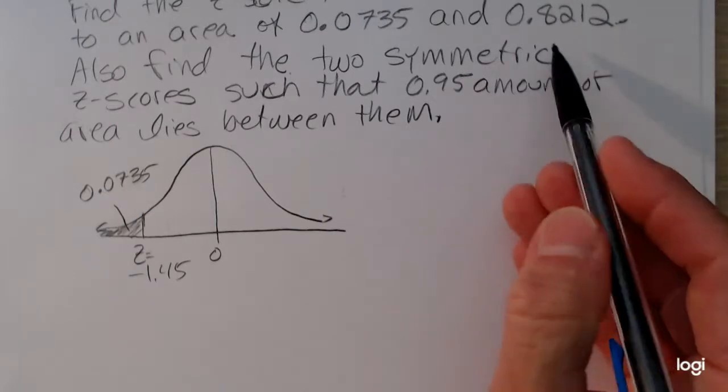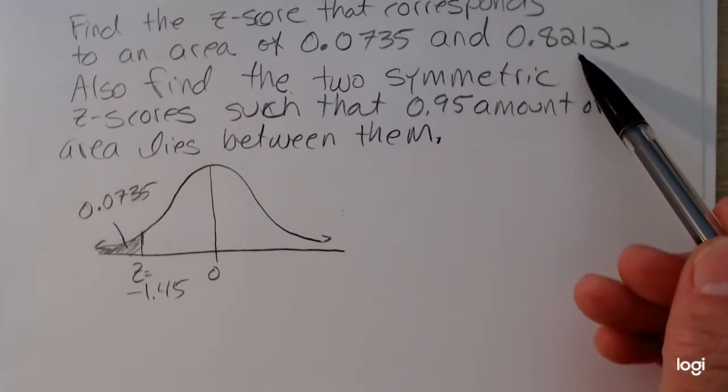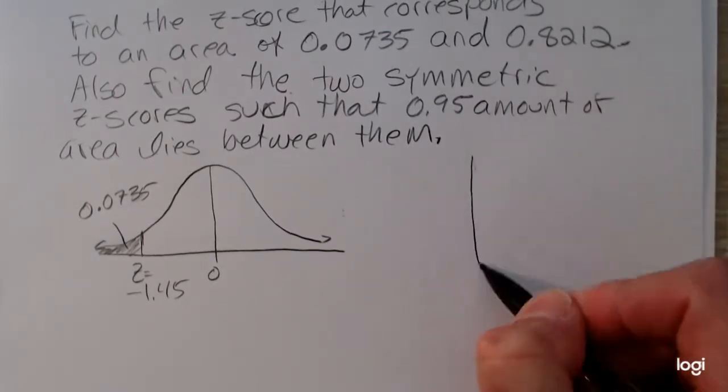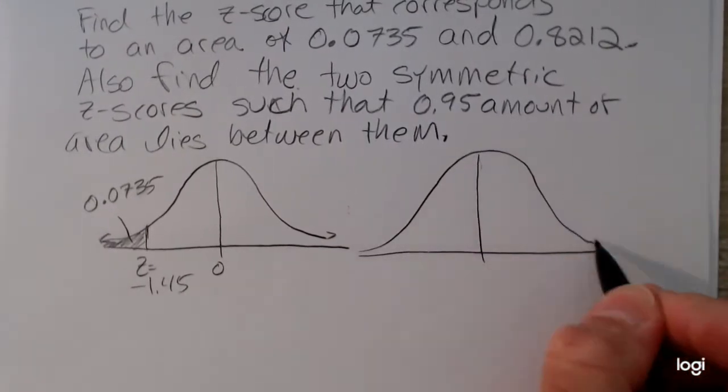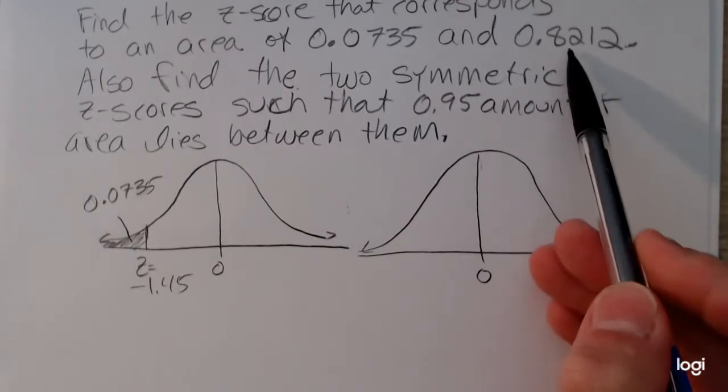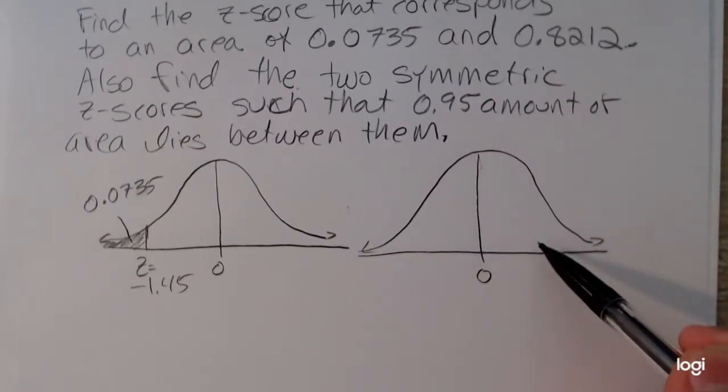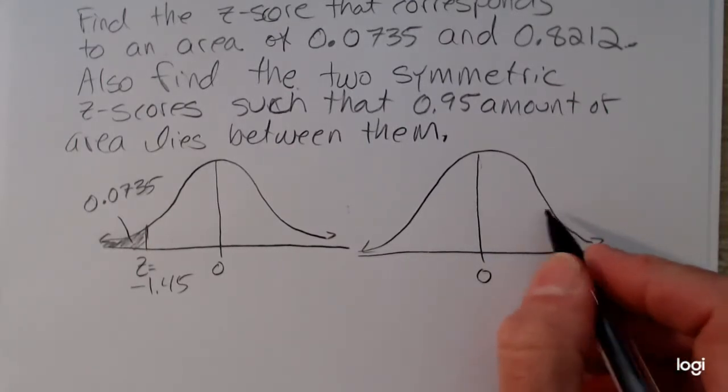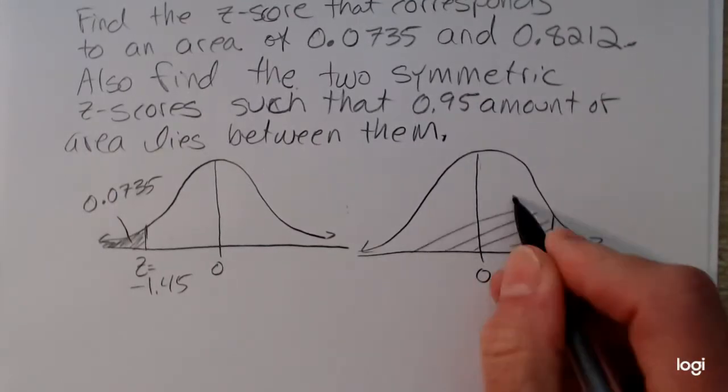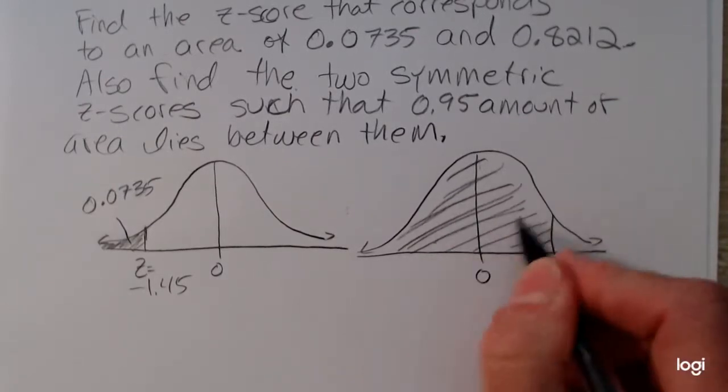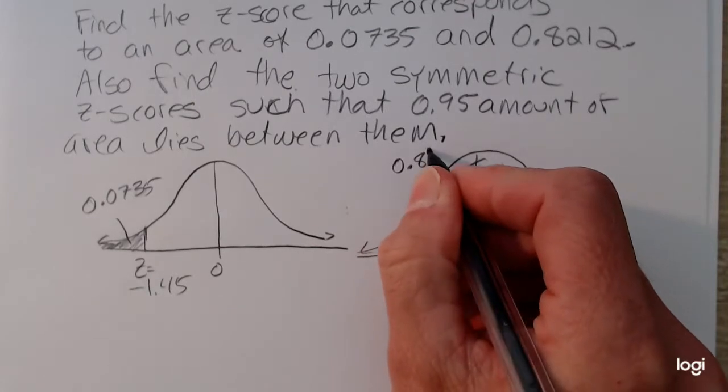Now, for the second one, my cumulative area or the area to the left of that z-score is 0.8212. So sketching what is given, putting 0 in the middle, this cumulative area is greater than 0.5. So I expect my z-score to be positive. So placing it up here and shading to the left, this area that's given is 0.8212.